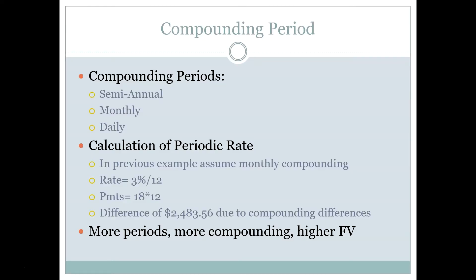Some other less common periods include quarterly, meaning four times a year. For instance, dividends — the share of profit paid to investors — are often paid quarterly. The process for adjusting these only relies on knowing how many compounding periods there are in a year. Semi-annual means two periods, so you divide your rate and multiply your N by two. Monthly means 12. Quarterly means 4. Daily means either 360 or 365 — in this class, assume 365 unless told otherwise.